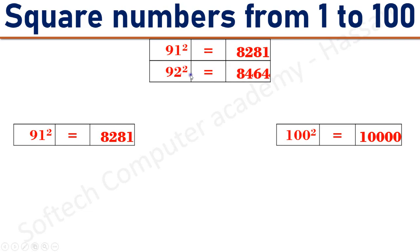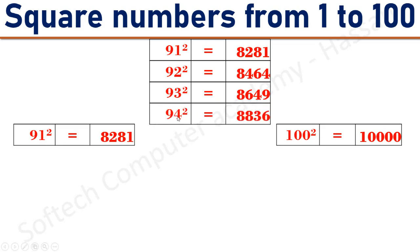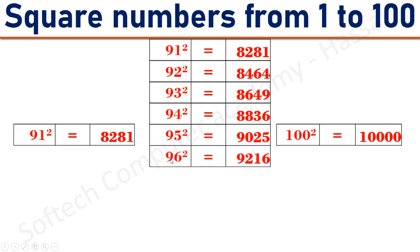92 square equals 8464. 93 square equals 8649. 94 square equals 8836. 95 square equals 9025. 96 square equals 9216. 97 square equals 9409.